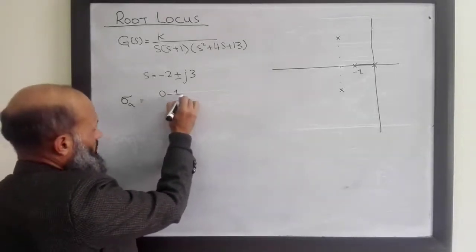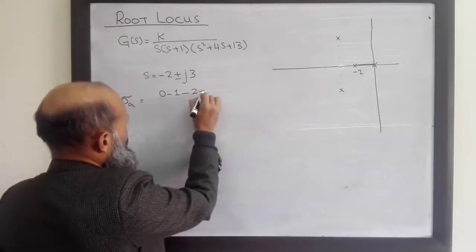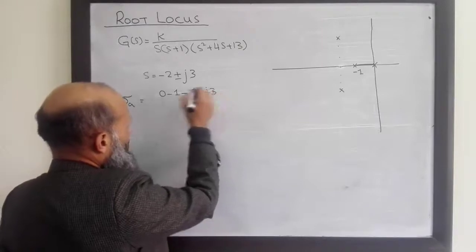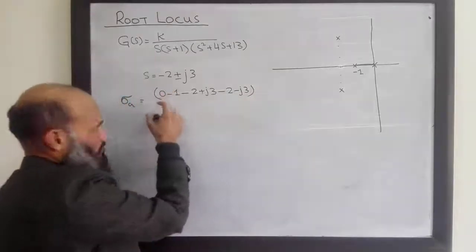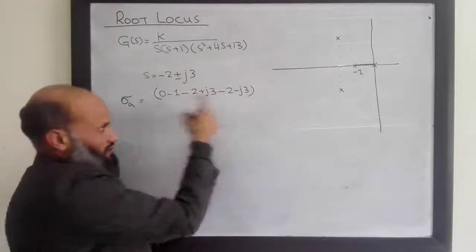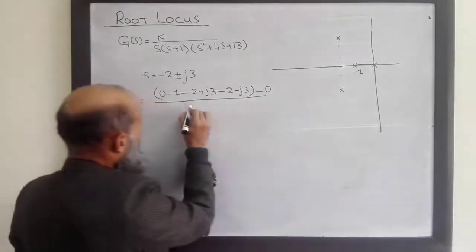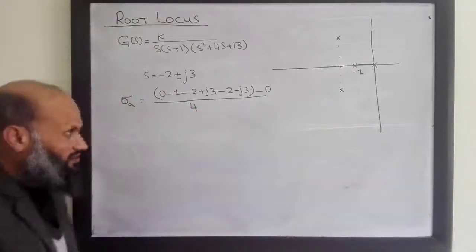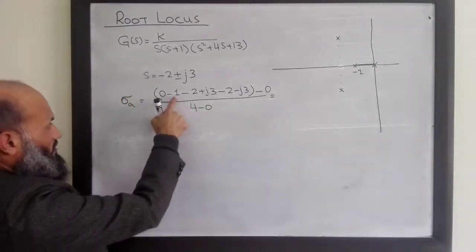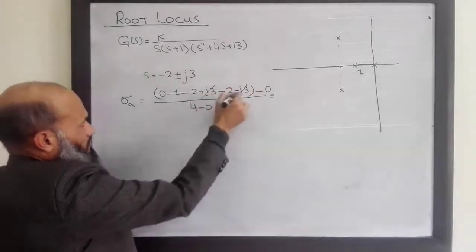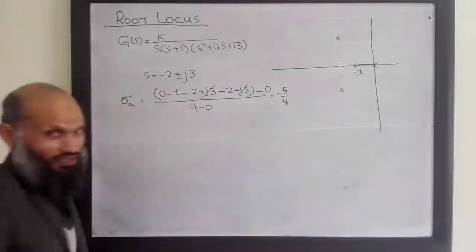The poles are at -1, -2 + j3, and -2 - j3. The sum of the finite poles is 0 + (-1) + (-2 + j3) + (-2 - j3) = -5. There are no finite zeros, so σ_a = -5 / 4 = -1.25.